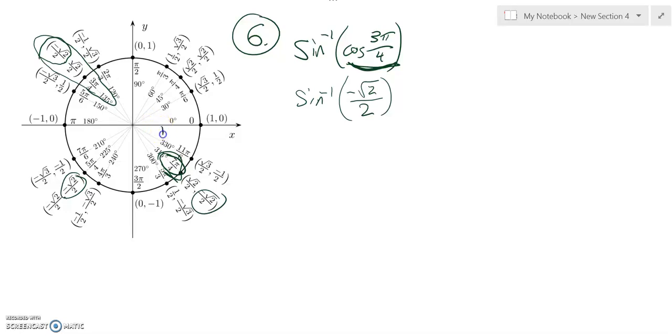This rotation right here is a negative version of this rotation. So positive pi over 4, this would be negative pi over 4. So the answer is negative pi over 4.